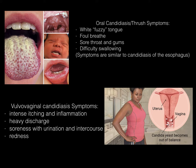Symptoms of oral candidiasis or thrush include a white fuzzy tongue, foul breath, sore throat and gums, and difficulty swallowing. Symptoms of esophageal candidiasis are similar but heightened as it spreads from the mouth down the esophagus. Vaginal yeast infection symptoms include intense itching and inflammation, heavy white discharge, soreness with urination and intercourse, and redness. In Latin, Candida literally means white, which is why a white colony is present in all these infections.